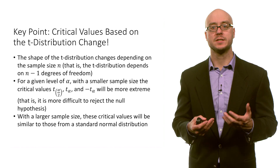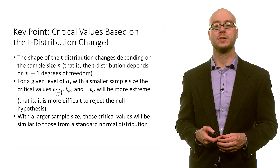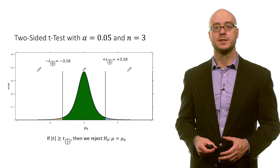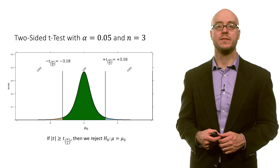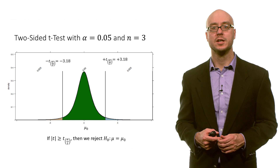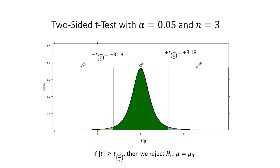With a larger sample size, these critical values will be similar to those from a standard normal distribution. Let's examine what's going on. Suppose we have a two-sided t-test with alpha of 0.05 and a sample size of 3. If we set alpha to 0.05, our actual critical value is going to be around positive or negative 3. Our rejection region is that if we have a test statistic more extreme than positive 3, roughly, or less than negative 3, roughly.